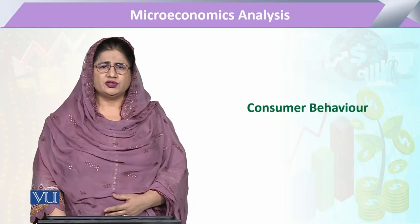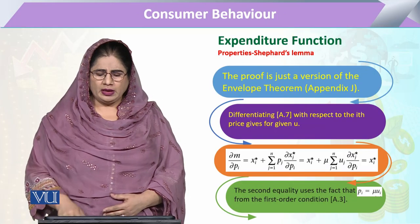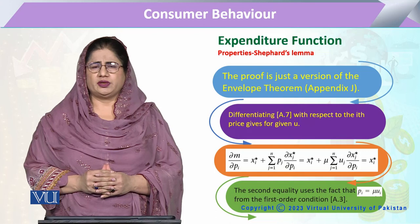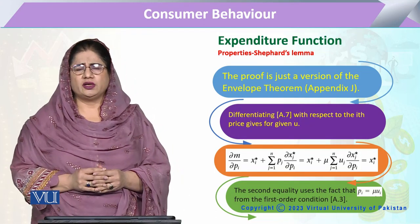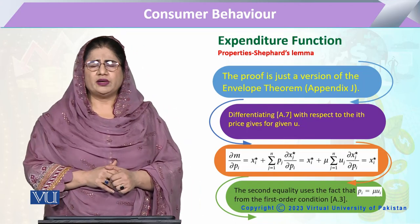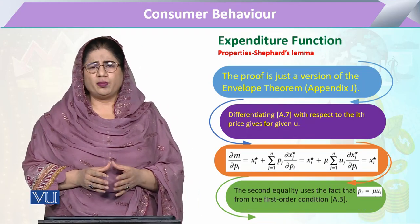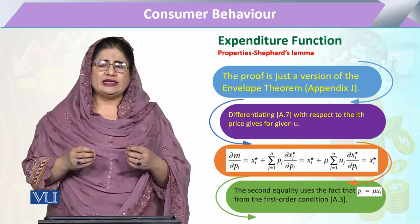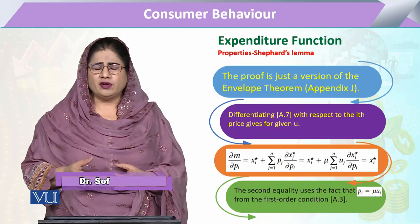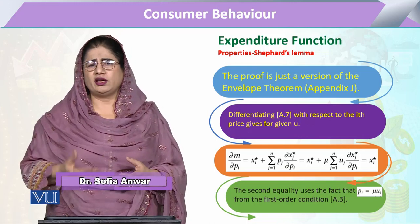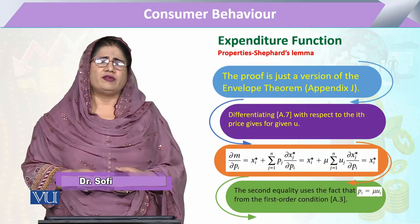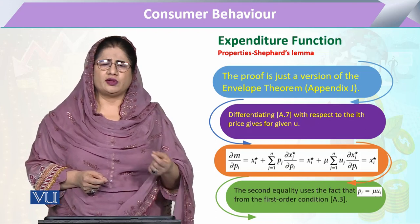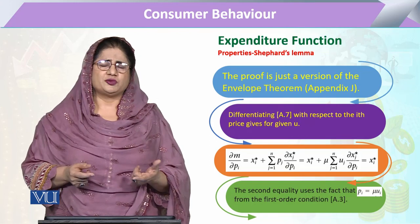Module 7, Chapter: Consumer Behavior. The topic is the expenditure function, and we are going to study its various properties. One property we have studied in our previous module is called Shephard's Lemma. This property is very unique — it entails that given by Ronald Shephard, whenever there is a consumer, he will select a very unique amount of the commodity to have the minimum expenditure.